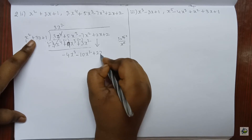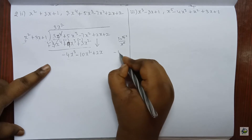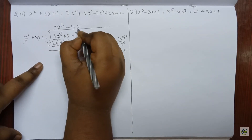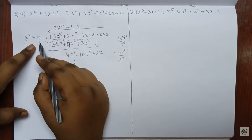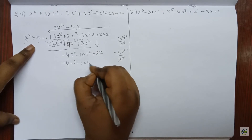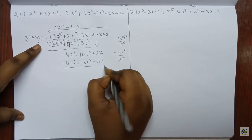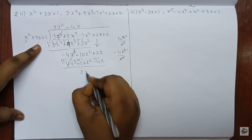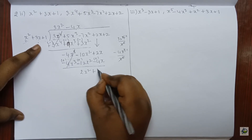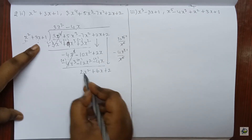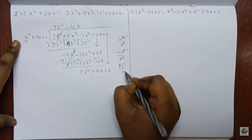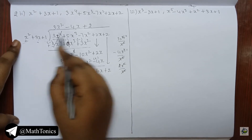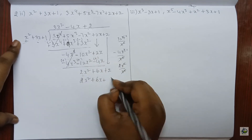Again we divide: minus 4 x cube divided by x square — x square and x cube get cancelled and 1x remains, so minus 4x. x square into minus 4x is minus 4 x cube. 3x into minus 4x is minus 12 x square. 1 into minus 4x is minus 4x. Now we change the signs. These both get cancelled. Minus 10 plus 12 is 2 x square. Plus 2 plus 4 is plus 6x. I bring the 2 down. Dividing 2 x square by x square — they cancel and we get 2, so plus 2. x square into 2 is 2 x square, 3x into 2 is plus 6x, and 1 into 2 is 2.